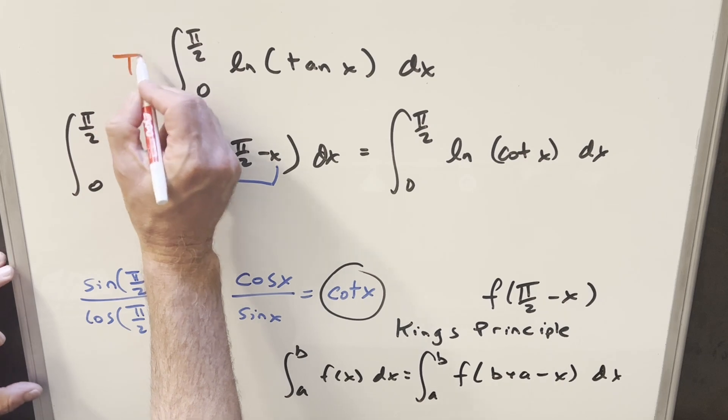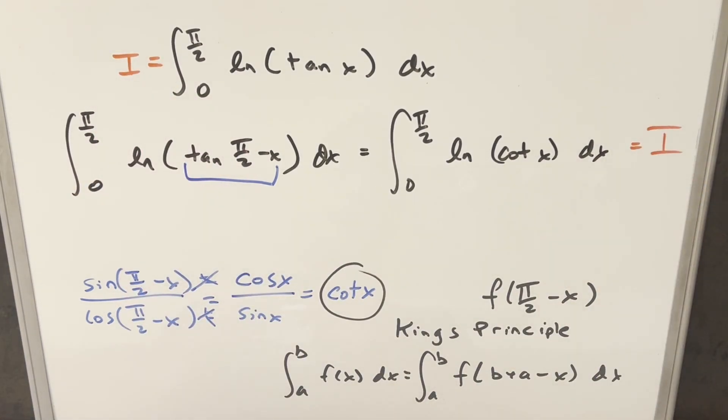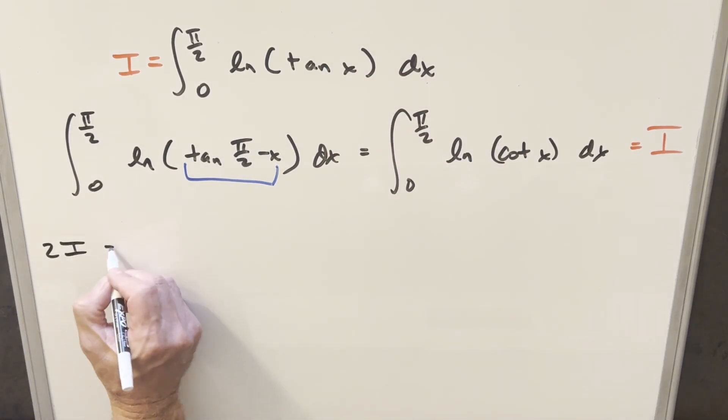We can put some labels on things. We can call our original integral I. So then this over here is also I. We can add this copy to this copy, and then down here, what we're going to have is just 2I.